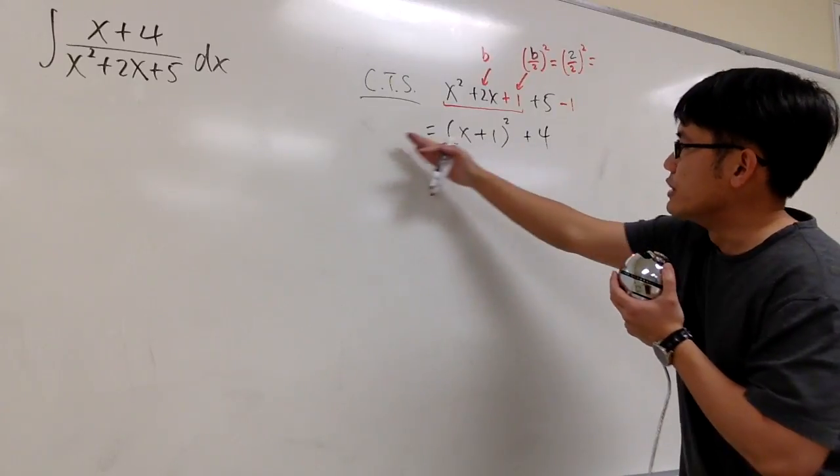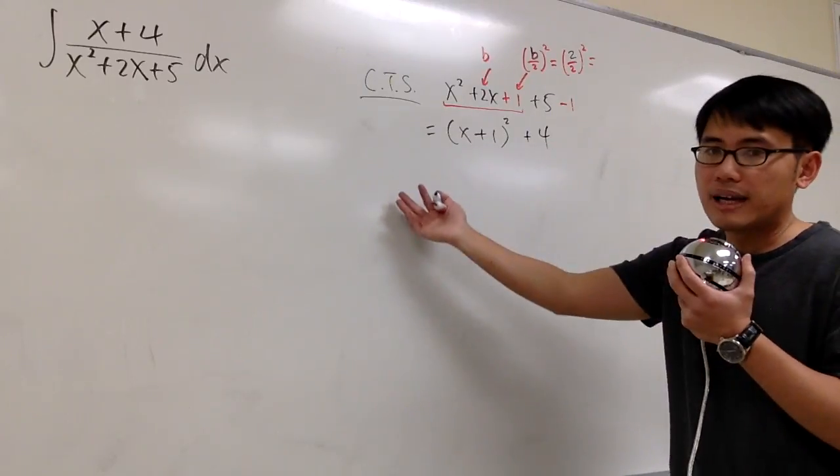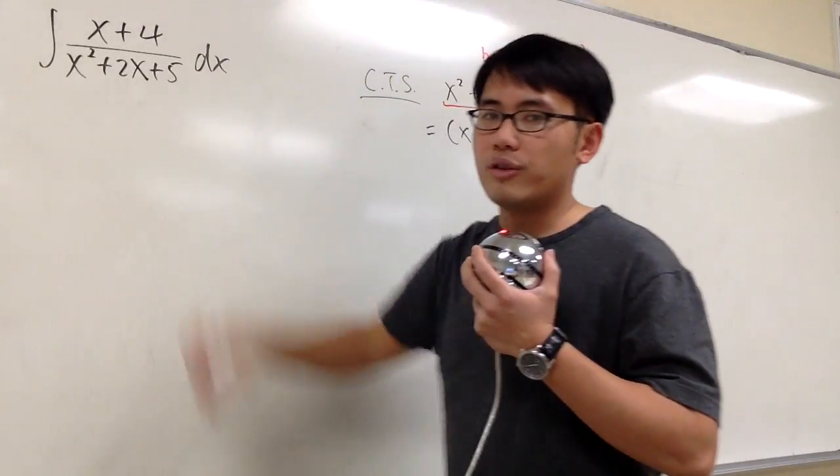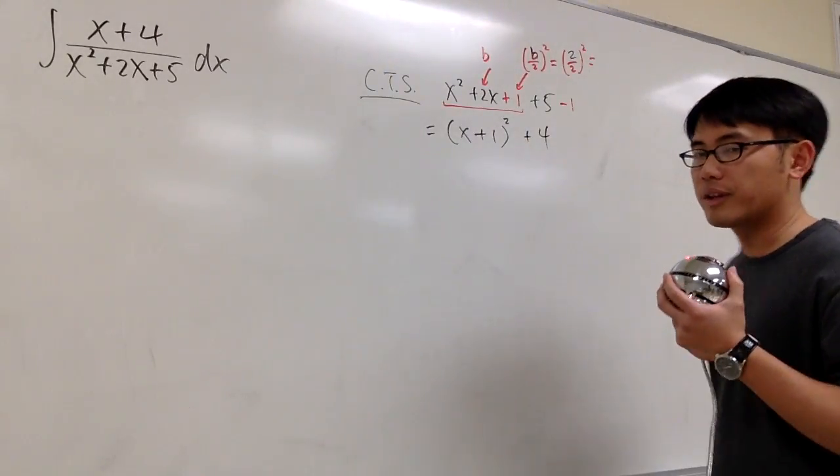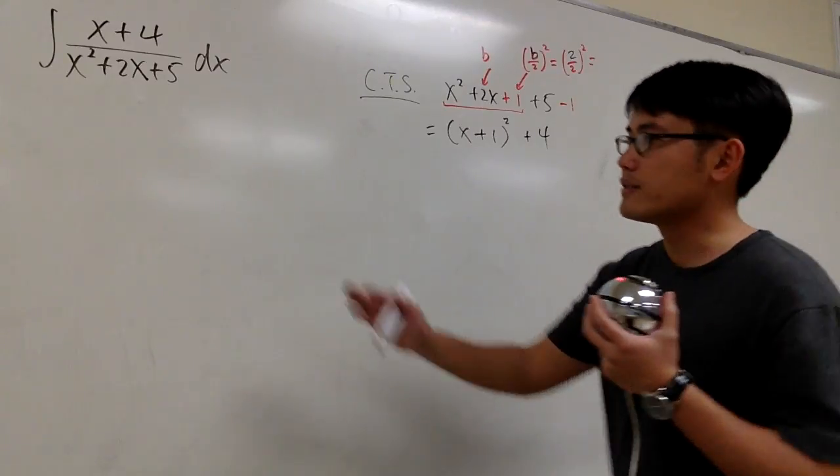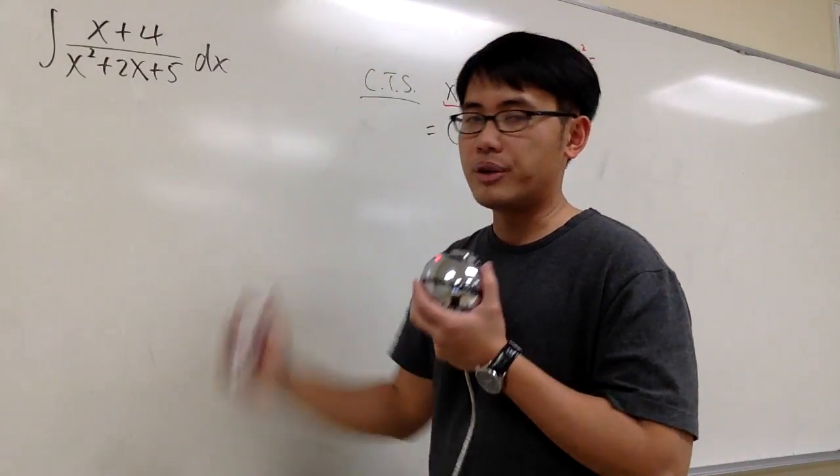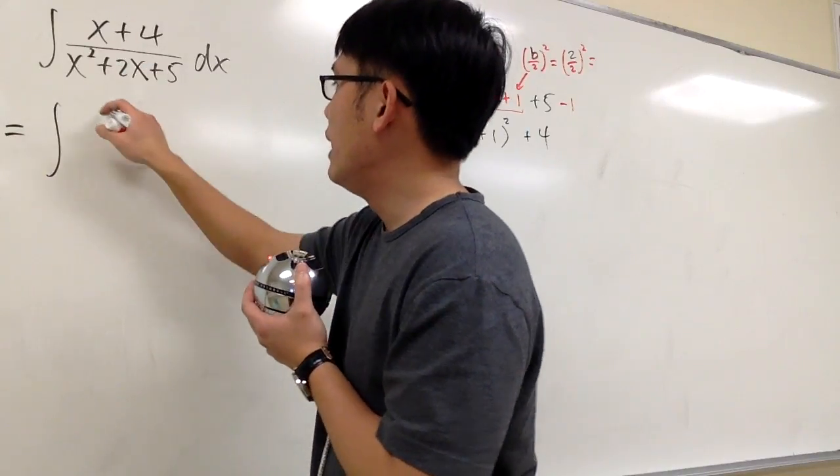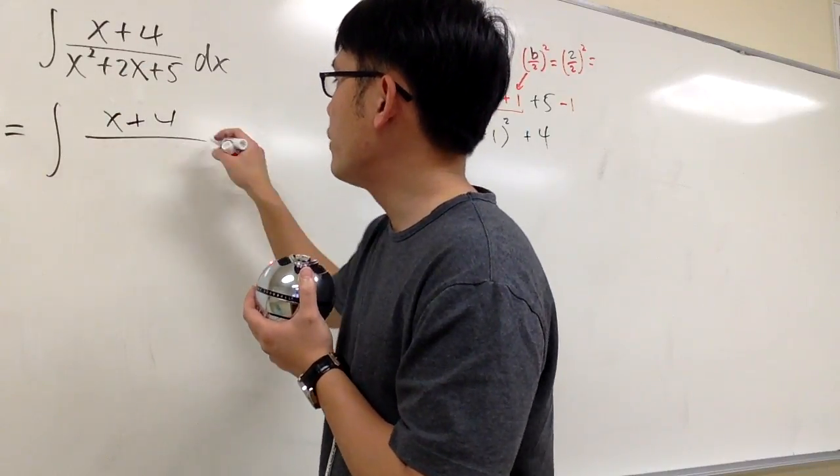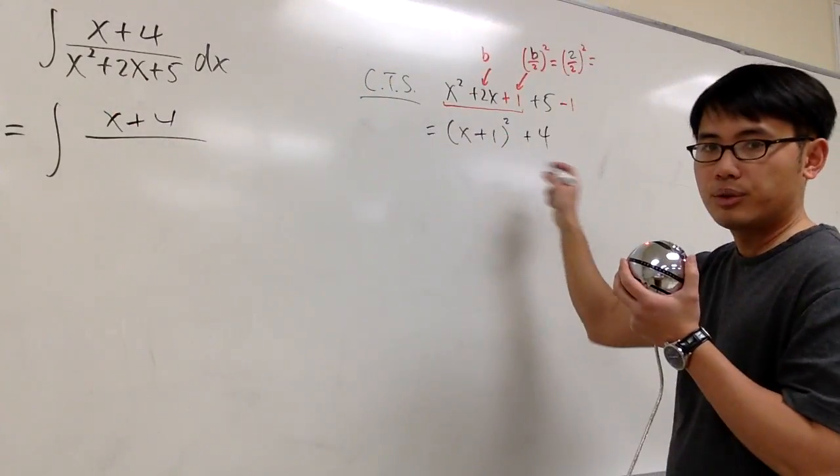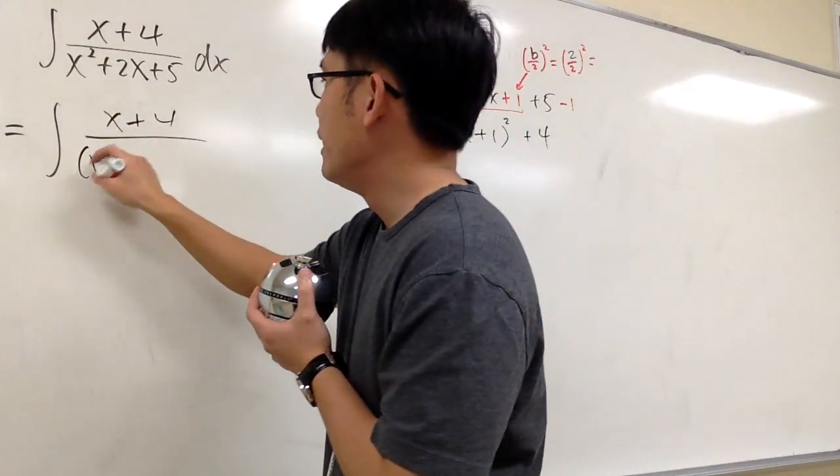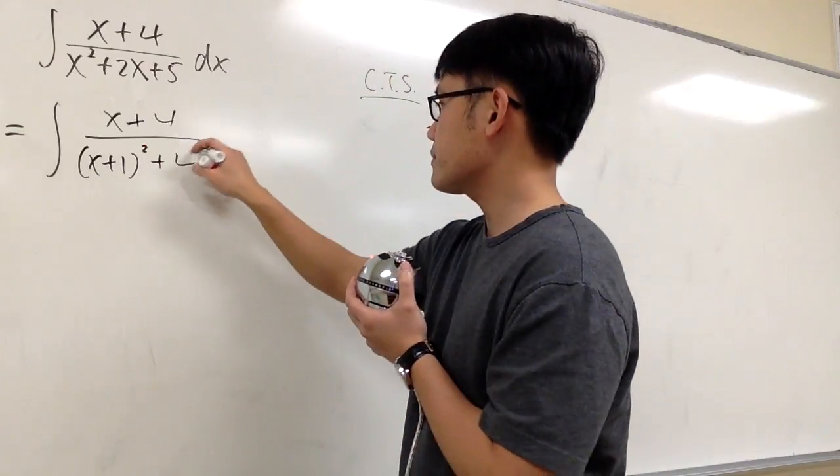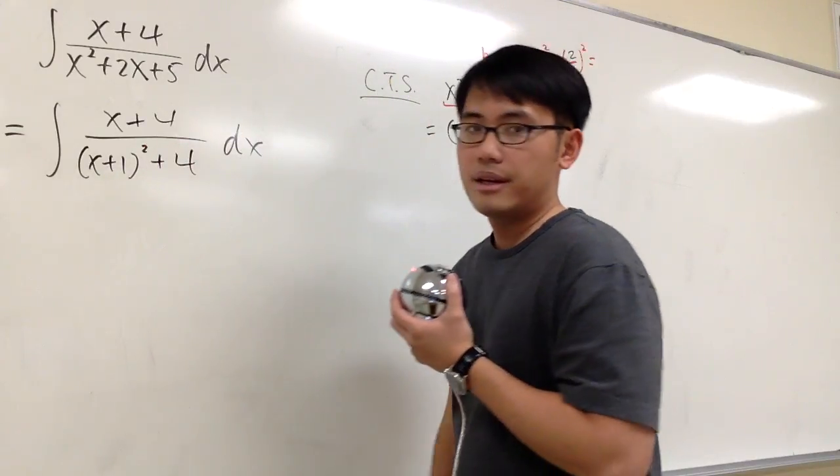And if you imagine, if you set this equal to 0, you have to subtract 4 on both sides, you get an imaginary number solution. That's why this has no real value, and then you have to complete the square for that. But anyway, this is the algebra, and now let's focus on the calculus. So right here, we are talking about the integral x plus 4 over the denominator, which is x plus 1 squared plus 4, dx on the side.